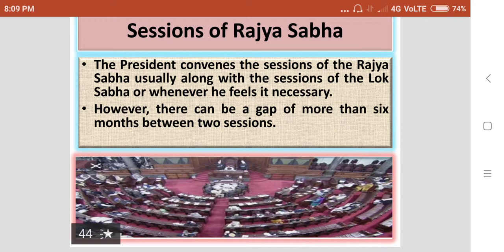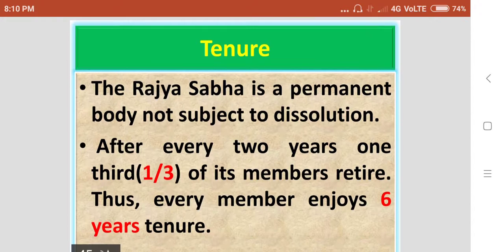The President convenes the sessions of the Rajasabha, usually along with the sessions of the Lokasabha or whenever he feels it necessary. However, there cannot be a gap of more than six months between two sessions. So while conducting sessions of the Rajasabha, a six-month gap should be maintained.